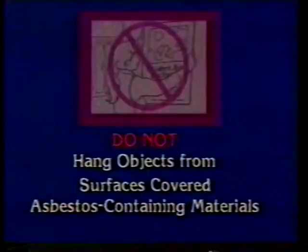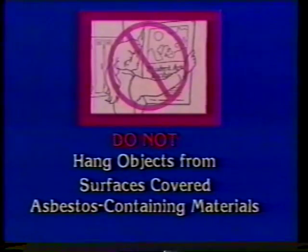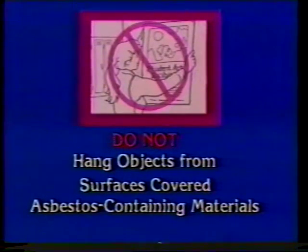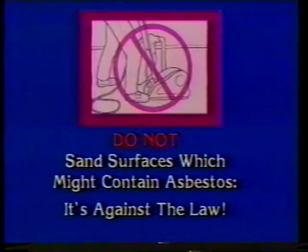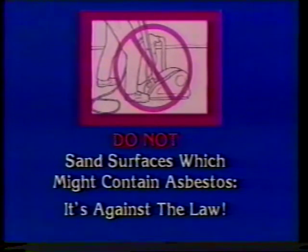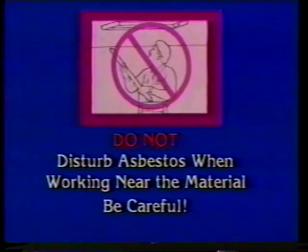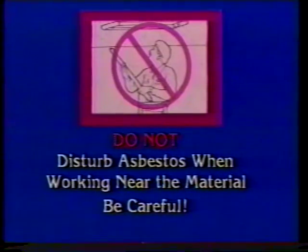Do not hang plants or anything else from ceilings or hang pictures on walls covered with asbestos materials. Do not pin or hang pictures on walls covered with asbestos materials. Asbestos floor tiles or backing material should not be sanded — in fact, it's against the law. Do not damage asbestos material while moving furniture or other objects. Do not disturb asbestos material when replacing light bulbs or when working near the material. Do not allow curtains, drapes, or dividers to damage asbestos materials.